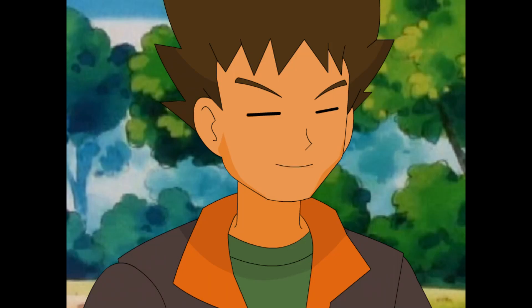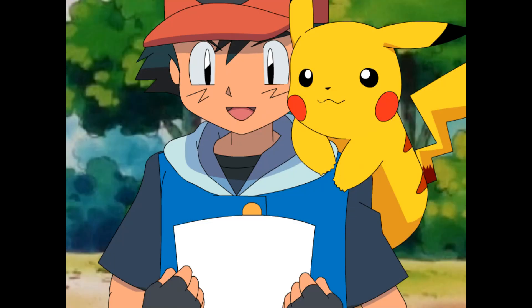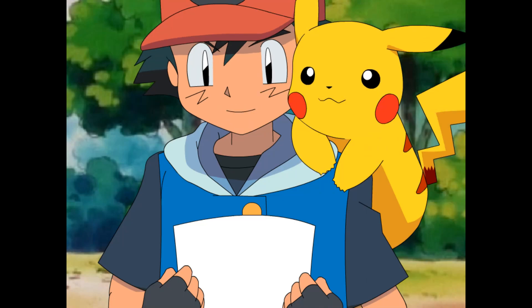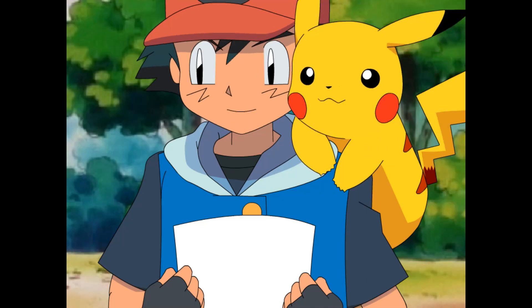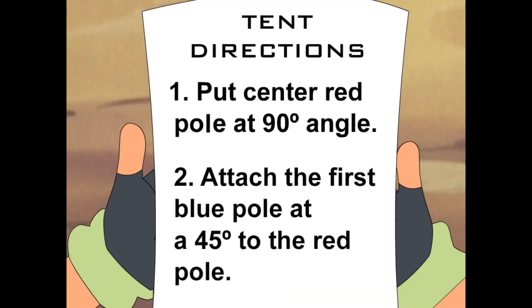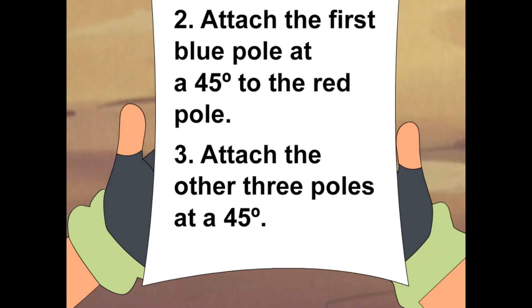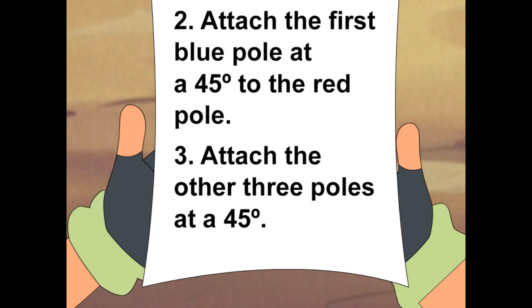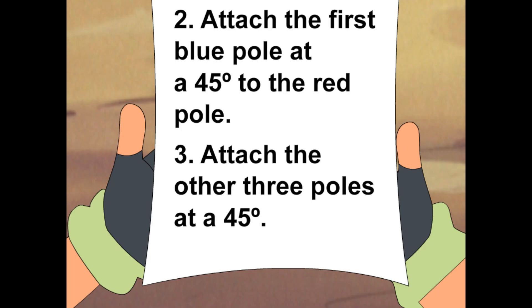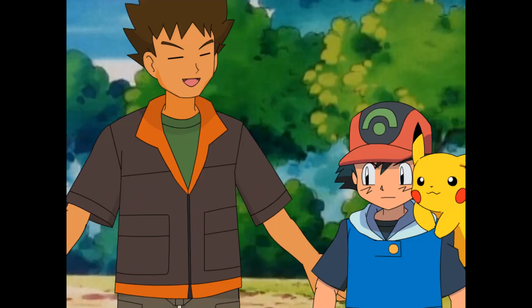Let me see that. Oh, you're right. A 90 degree angle. Okay, cool. What does that mean? I'm not exactly sure. What's step number two? Attach the first blue pole at a 45 degree angle to the red pole. And then what else? Attach the other three poles at a 45, or it could be 450 angle. You gotta be kidding! That's all it says! Oh, brother. How are we gonna put this tent up?